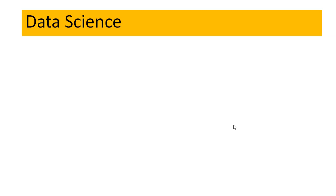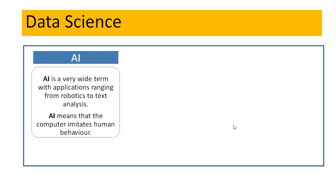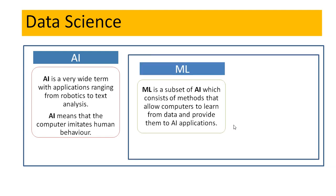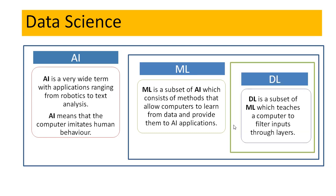Data science, along with related terms like artificial intelligence, machine learning, and deep learning, all look similar because they depend upon data in one way or another. AI is a broad term ranging from robotics to text analysis — it means the computer imitates human behavior. Machine learning is a subset of artificial intelligence which consists of methods that allow computers to learn from data and provide them to AI applications. Deep learning is a subset of machine learning which teaches a computer to filter input through layers.